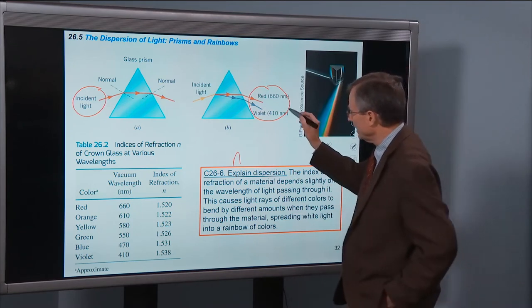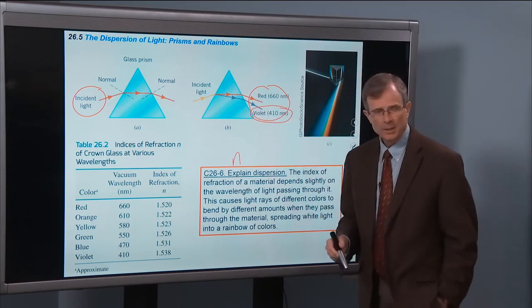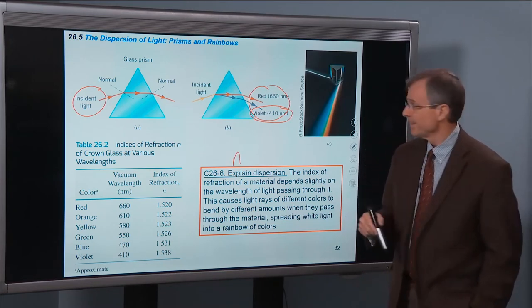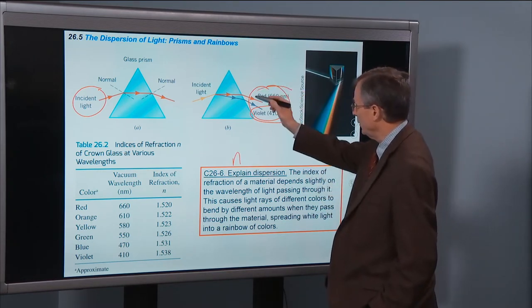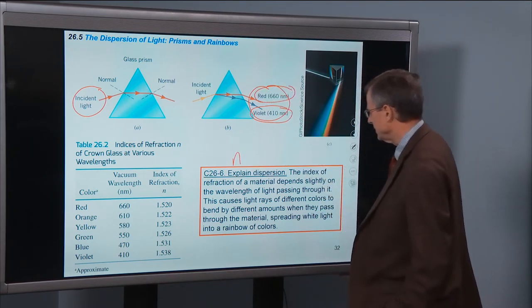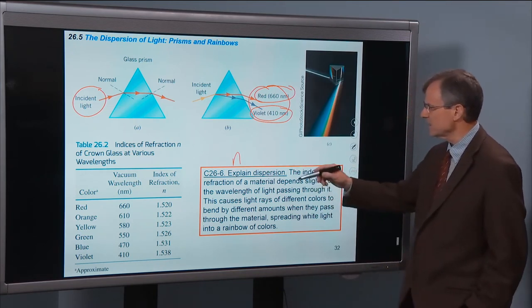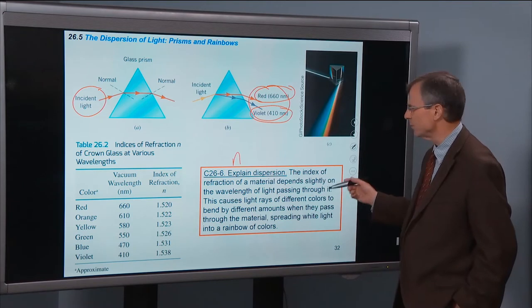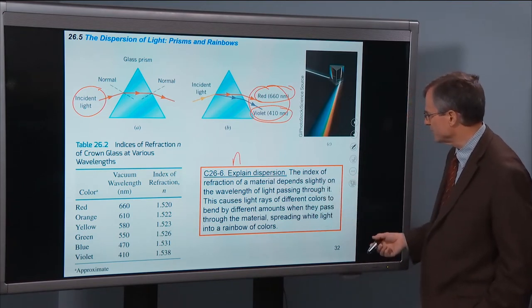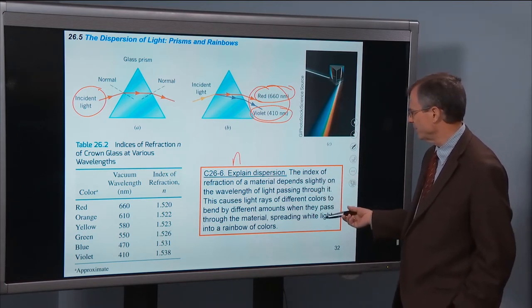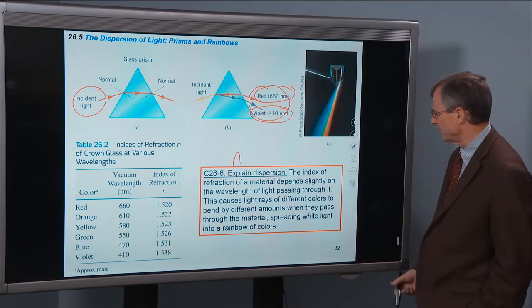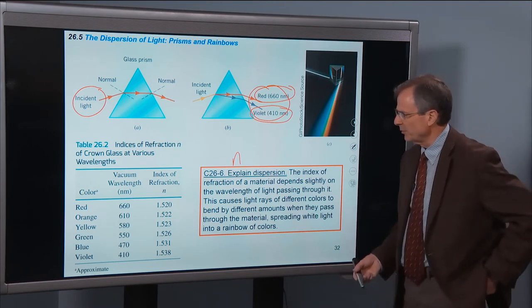With violet, as was shown in the video, refracting the most, bending the most. And red with the longest wavelength, bending the least. So the index of refraction depends slightly on the wavelength of light passing through the material. This causes light rays of different colors to bend by different amounts when they pass through the material, spreading white light into a rainbow of colors.